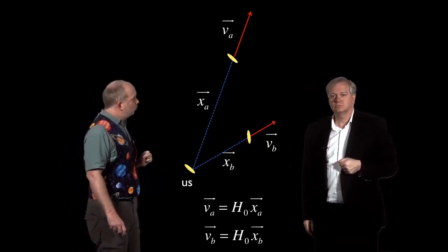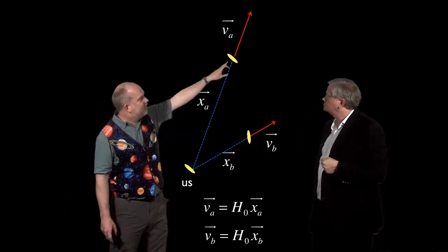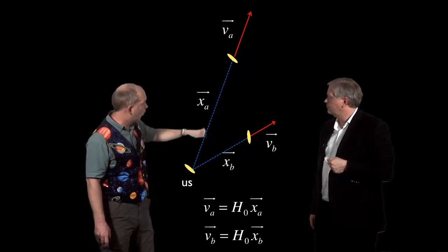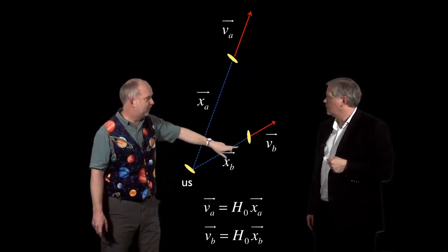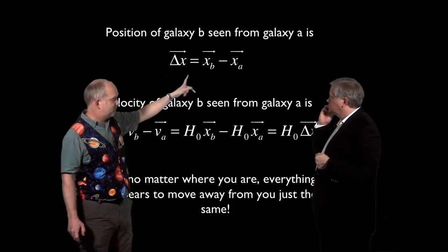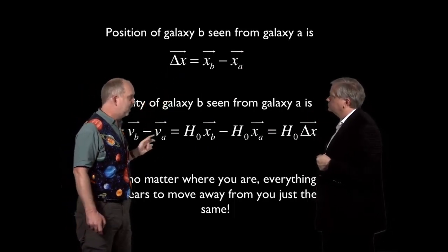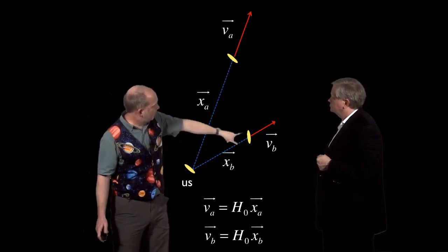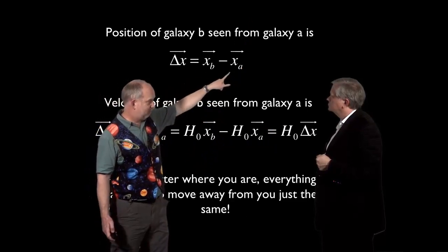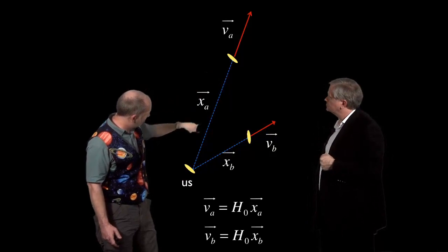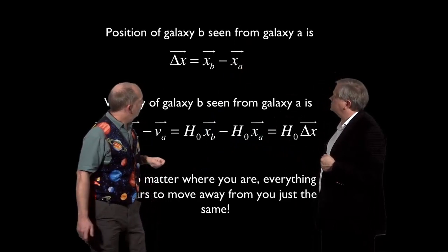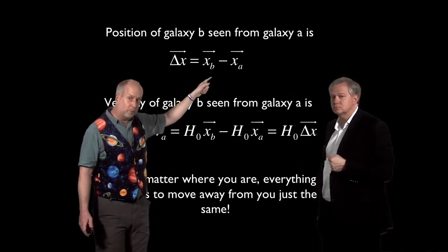But where this vector thing becomes very useful is if you now ask, okay, let's say you've got aliens living on this galaxy here. What would they see? Now if they look back at us, we would appear to be moving away from them at equal opposite speed. But how about this one over here? What would they see for this other galaxy over here? So the first thing they can ask is what's the distance, the vector displacement from galaxy A to galaxy B? So that's what's the vector from there to there? And that is simply XB minus XA vector sum. So that's the vector arithmetic. So you go minus XA plus XB and that gets you from there to there. So that would be that arrow. So that's how far away galaxy B looks from galaxy A.